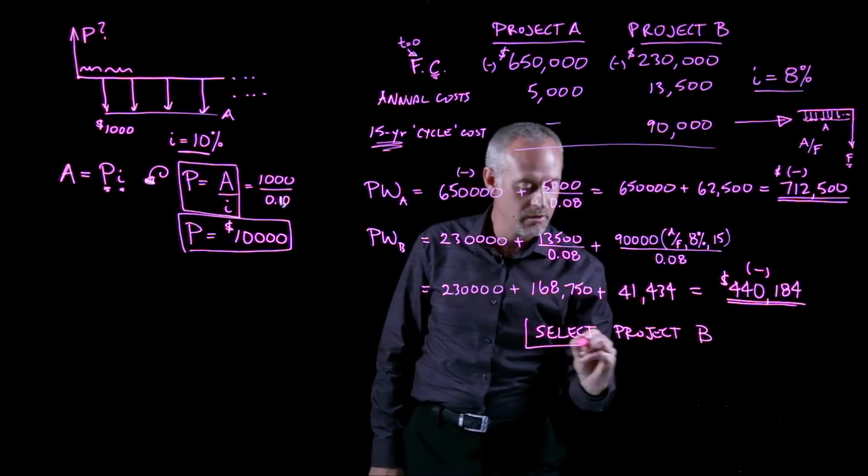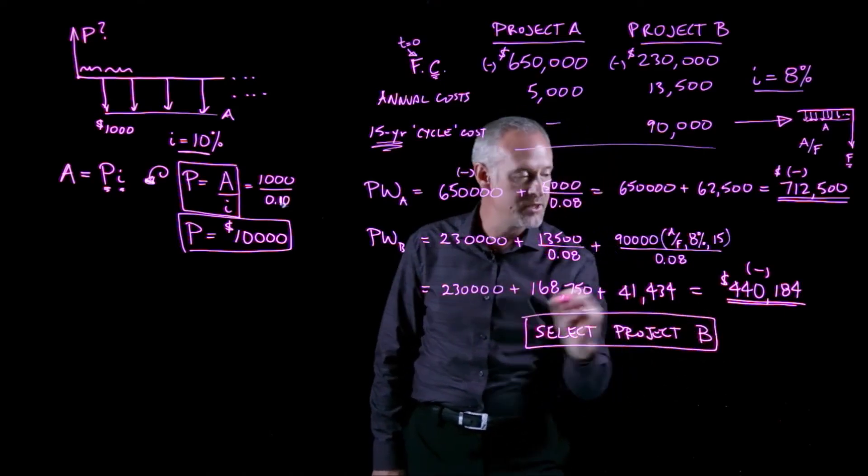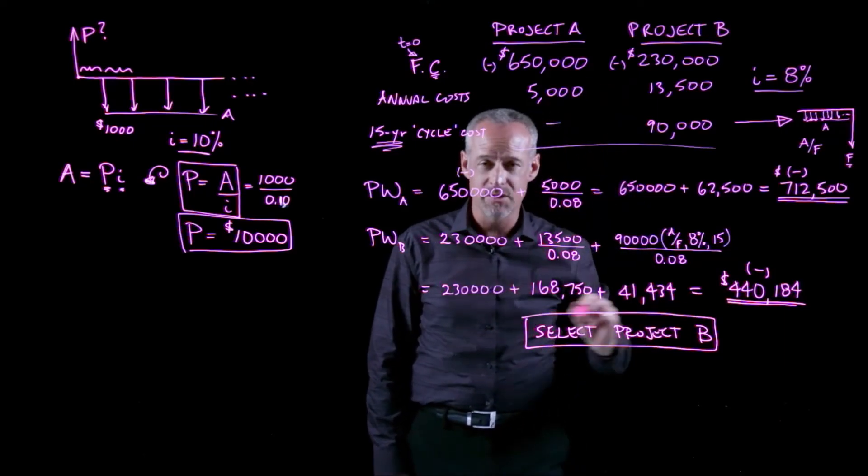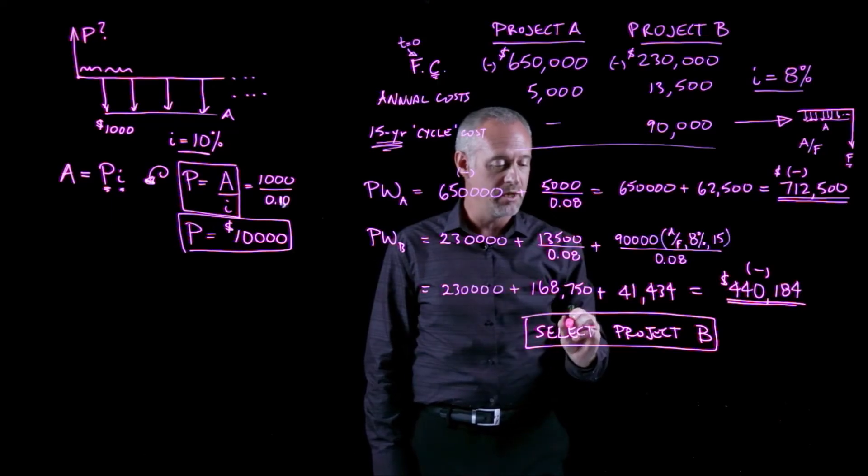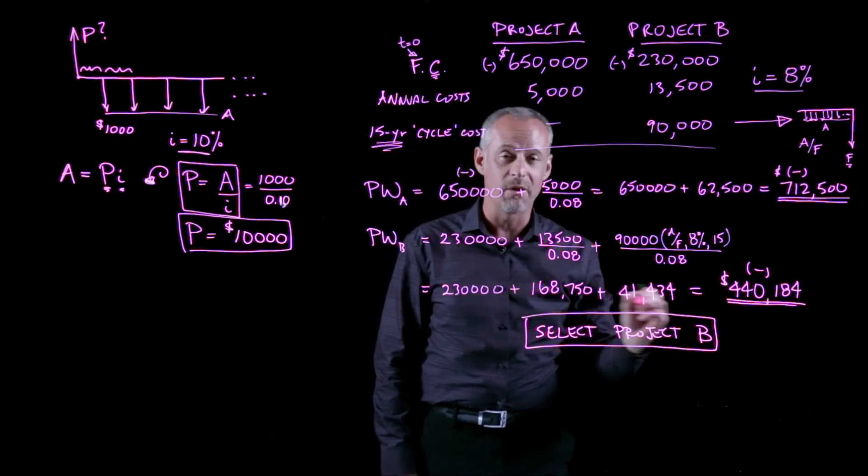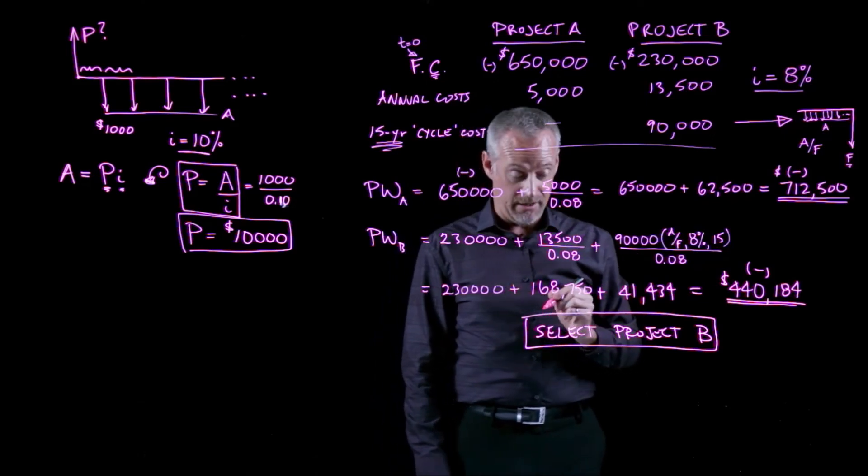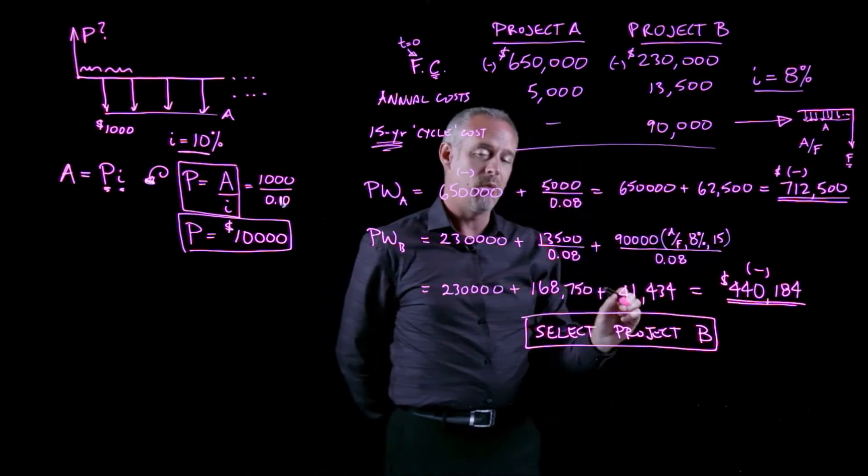You would say, select Project B. So Project B has the least cost. So back to this decision we had to make, really the answer to the engineering economics problem is that we make a recommendation to select Project B based on the engineering economic analysis.